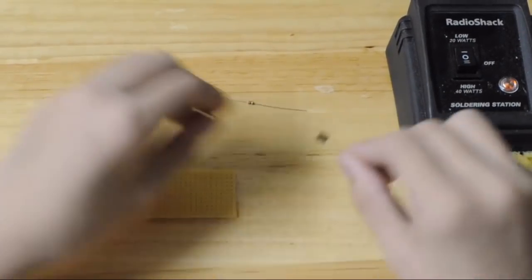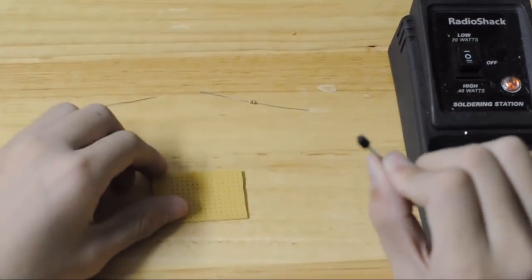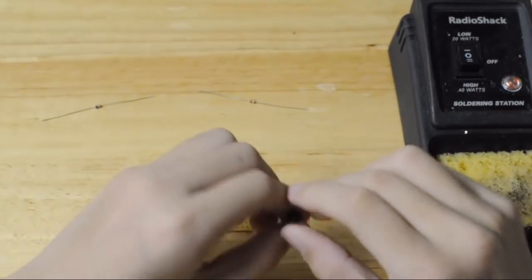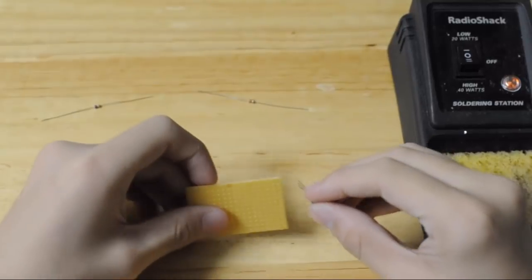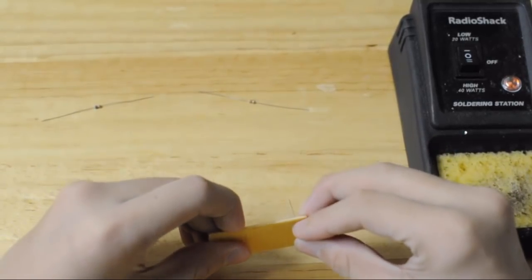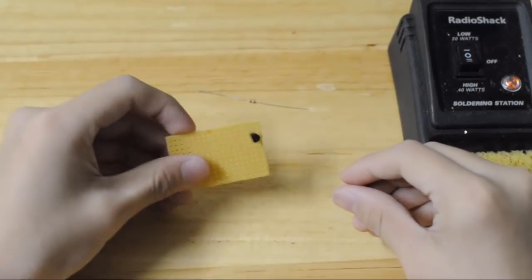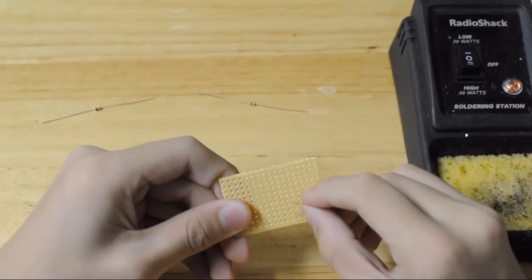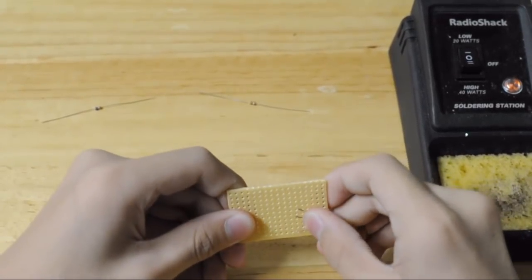The first step is to take your transistor, and you need to take the three legs and insert them into three of the holes of the perfboard. Now make sure the flat side is facing the left when you're doing this. Now fold the three pins down so that the transistor stays in place.